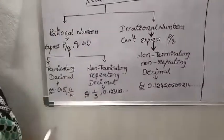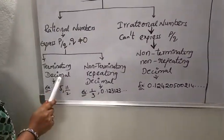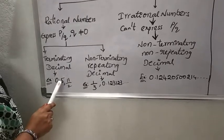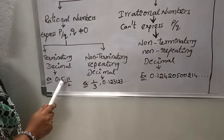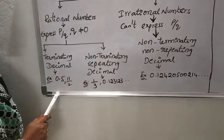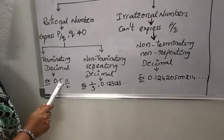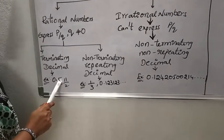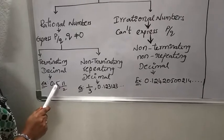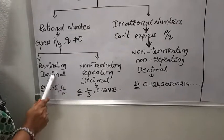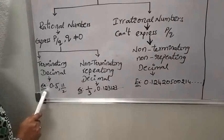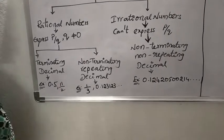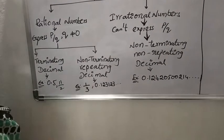What is a terminating decimal? Terminating decimal means if we have to divide a number with another number, then we are getting remainder 0. The quotient at the decimal part is ending. Such type of numbers are called as terminating decimals, like 0.5, 11 by 2, and so on.